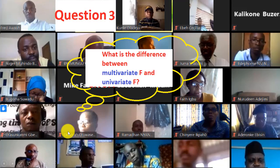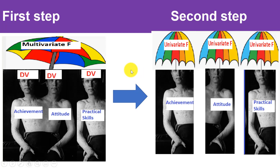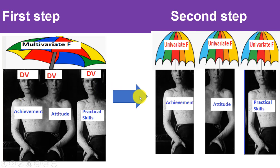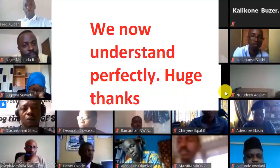A question: what is the difference between multivariate F and univariate F? The multivariate F is like an umbrella over all three dependent variables — achievement, attitude, and practical skills are grouped together and one F is computed over all of them. That is the first step of MANOVA. In the second step — after passing the multivariate level — MANOVA sends you to ANOVA to do a univariate F separately for achievement, for attitude, and for practical skills.